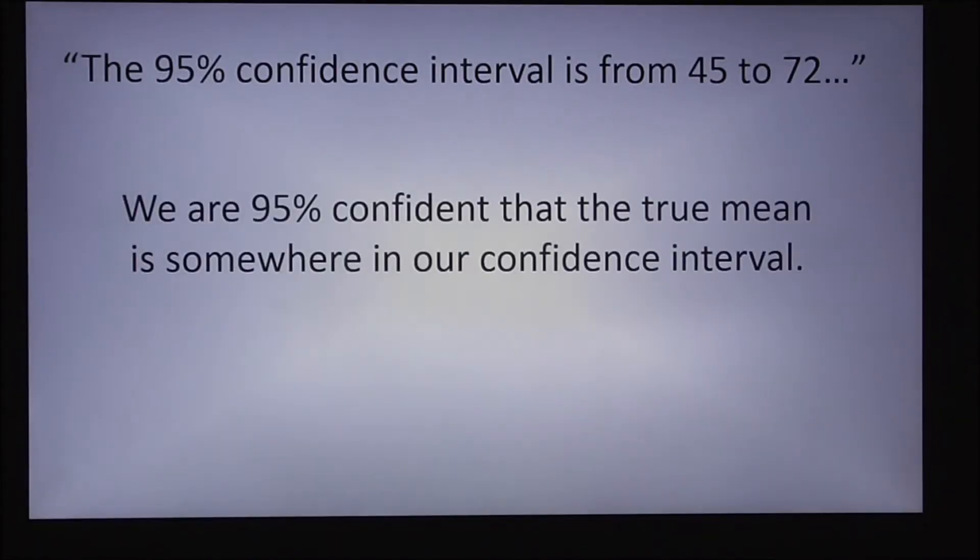So there are lots of different ways to say this. For example, I might say we are 95% confident that the true mean is somewhere in our confidence interval. This is a correct interpretation of the meaning of a confidence interval. Because I have a confidence level of 95% that I have actually captured the true mean somewhere between 45 and 72.